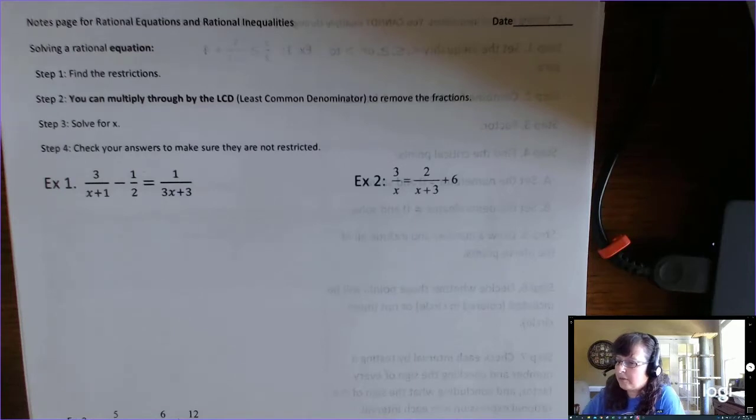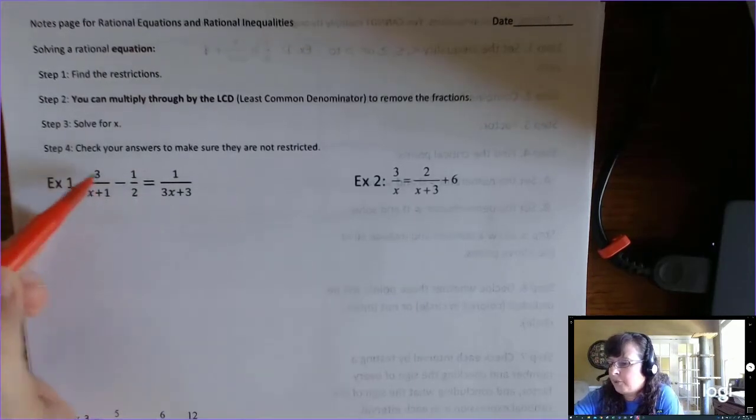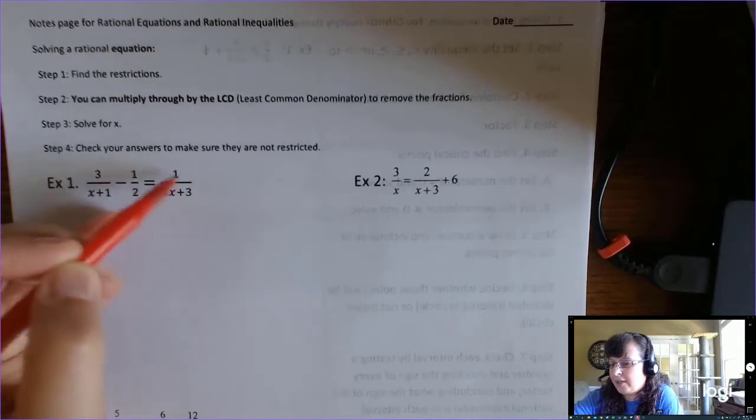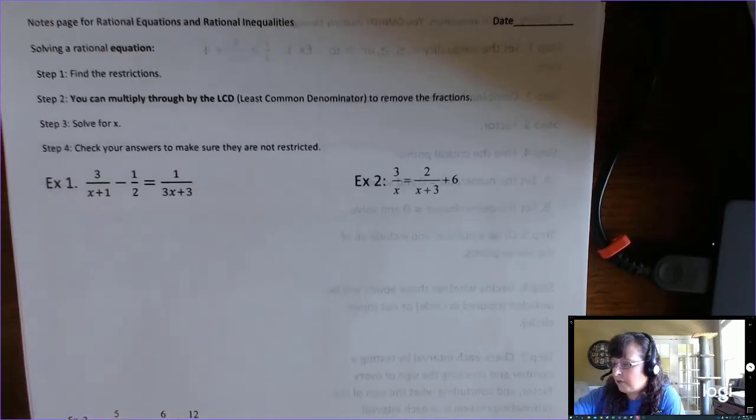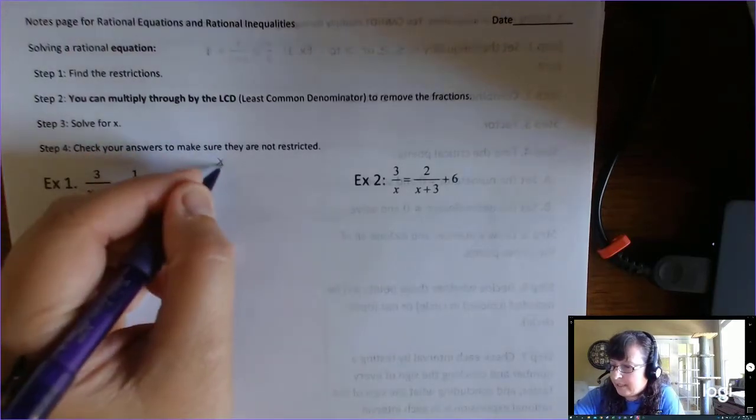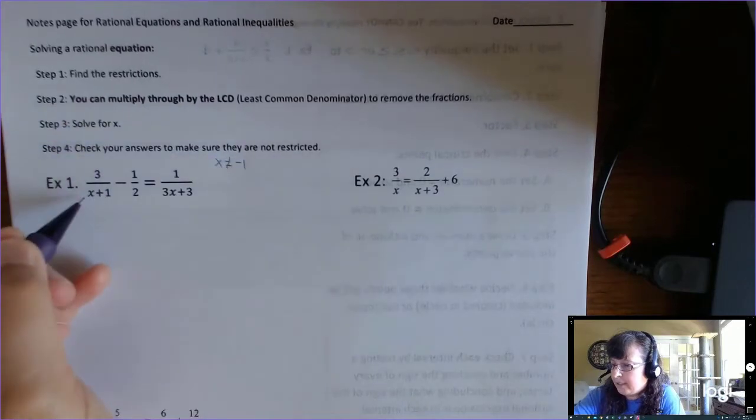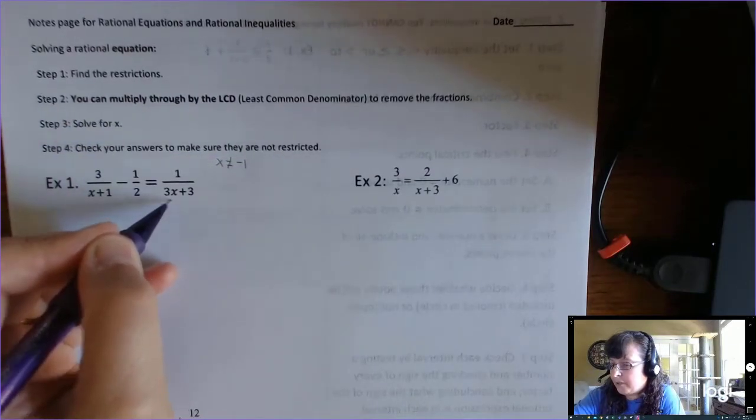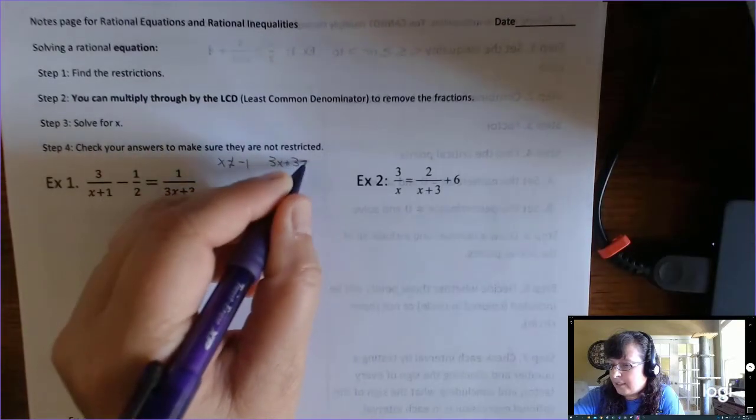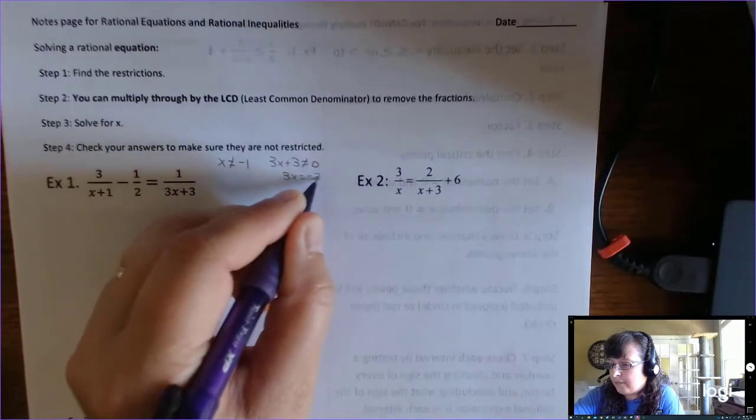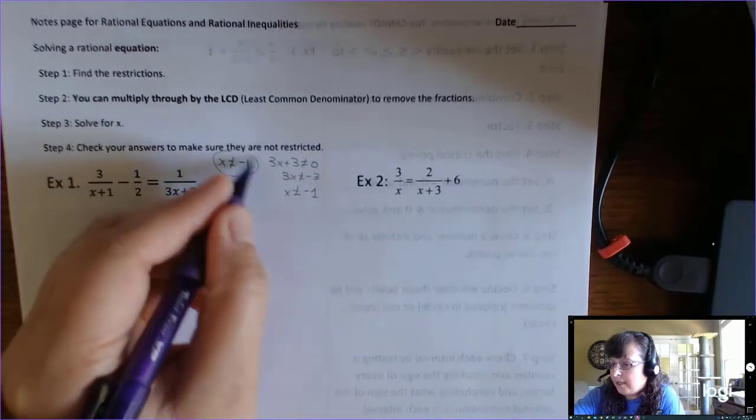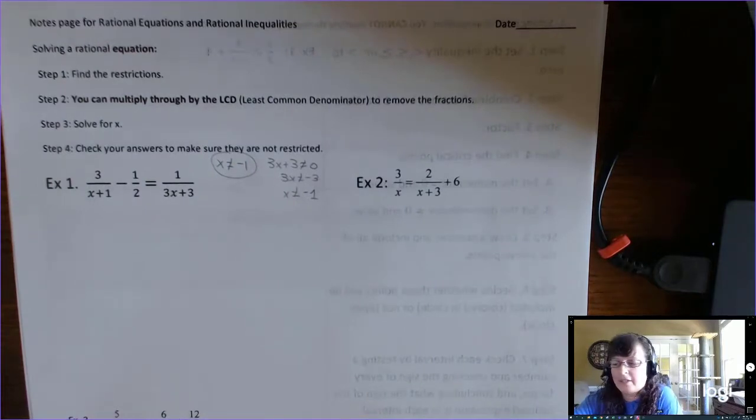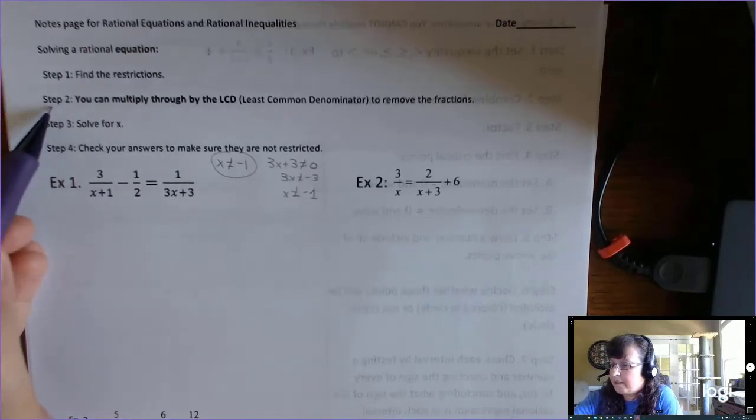The steps are there. First of all, since these are rational, if we were to graph this left side and graph that right side you would have restrictions. So we have to find those restrictions and you look at the denominator and you can see that x cannot be negative one here. And x also cannot be negative one there because if you set 3x plus 3 not equal to zero you get 3x is equal to negative three. And divide and you get x can't be negative one. So any other value of x is okay except for x is equal to negative one. Now you can do that at the beginning or you can do it at the end.